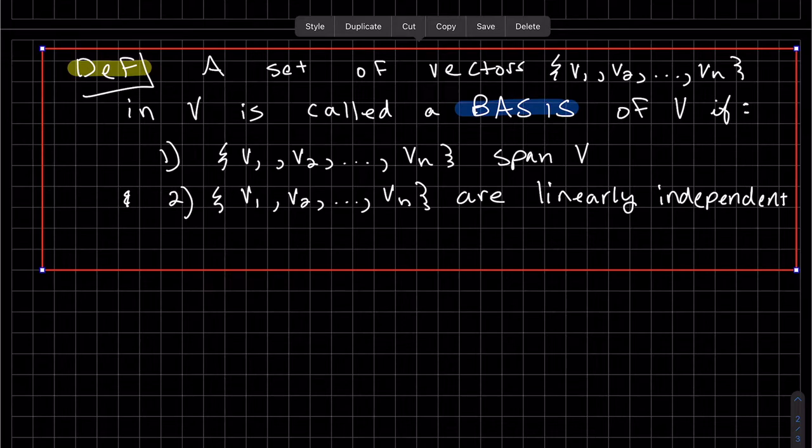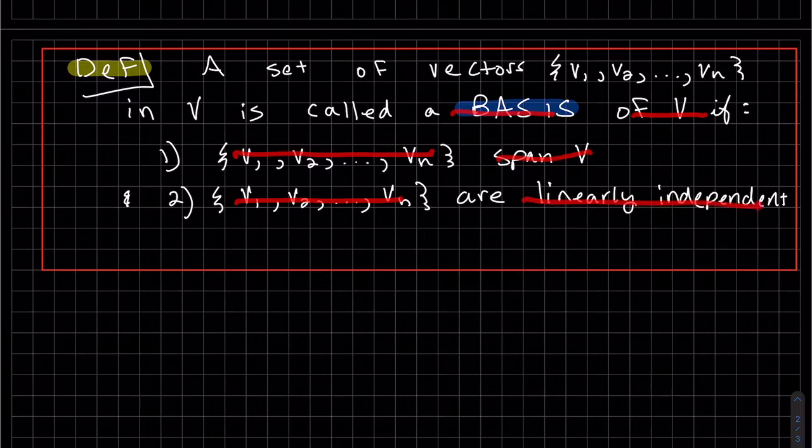Okay, so we have a set of vectors and it's called a basis of V if the set spans V and if the set is linearly independent. So this is also called the fundamental set in differential equations.